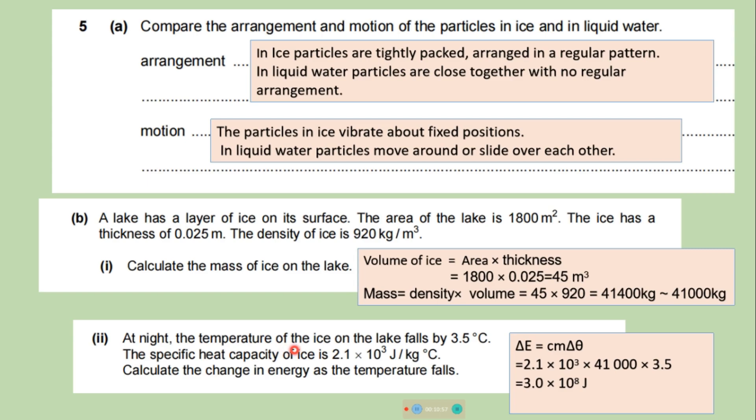At night, the temperature of the ice on the lake falls by 3.5 degree centigrade. So the change in temperature is 3.5 degree centigrade. The specific heat capacity of ice is given. Calculate the change in energy. So we know that change in energy, we can use this formula C M delta theta. Where C is the specific heat, M is the mass, and delta theta is change in temperature. We have C, we have change in temperature, and we have mass here. Put all the values in the formula and calculate E. Delta E change in temperature, it is 3 into 10 to the power 8 Joule.